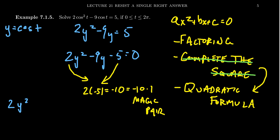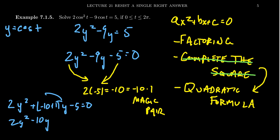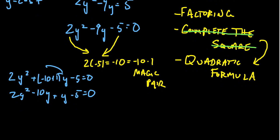What we're going to do is replace the −9y with −10y + 1y, so the equation becomes 2y² − 10y + y − 5 = 0. Distribute the y to get 2y² − 10y, and then you get a (y − 5) term. The whole idea of finding a magic pair is so you can break the middle coefficient into two terms and proceed to factor by groups. We'll put the first two terms in a group: 2y² − 10y, and the second two in a group. It doesn't matter which order you use.